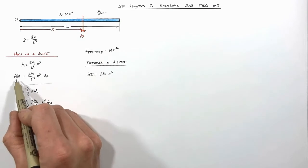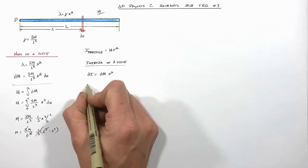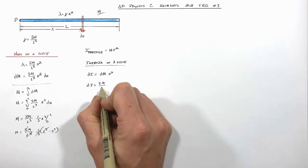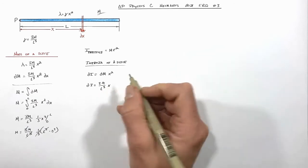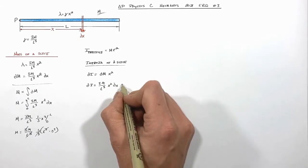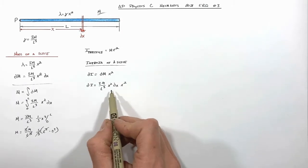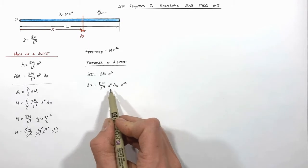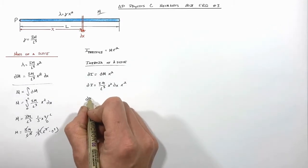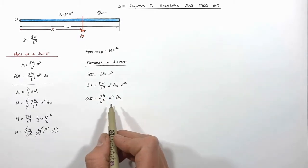Substituting our expression for dm, we get dI = (3m/L³)·x²·dx·x². The big mistake people make here is forgetting to include both x² terms. When you do it correctly, this gives dI = (3m/L³)·x⁴·dx — the inertia of a single slice.